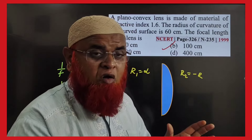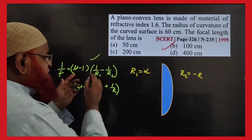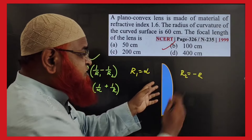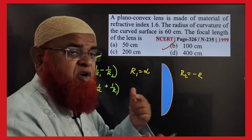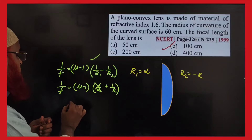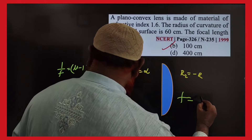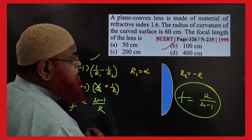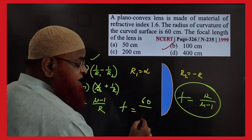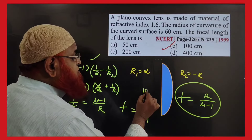For a plano-convex lens, using the lens maker's formula with R1 = infinity (plane surface) and R2 = −R, the first term vanishes. This gives 1/f = (mu − 1)/R, so f = R/(mu − 1). With R = 60 and mu = 1.6: f = 60/0.6 = 100 centimeters.